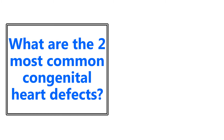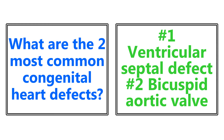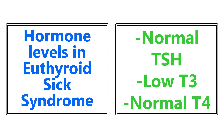What are the two most common congenital heart defects? This is going to be a ventricular septal defect as well as a bicuspid aortic valve. Hormone levels in euthyroid sick syndrome — Comlex Level 3 loves to ask these questions where one hormone is elevated, something else is decreased, something else is normal. So definitely be sure to reason through the physiology for those. For euthyroid sick syndrome, you're going to have a normal TSH, a low T3, and a normal T4.